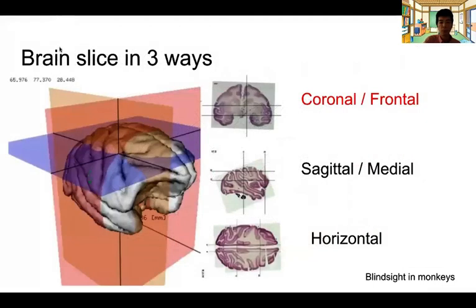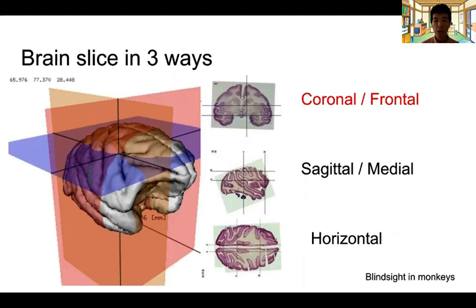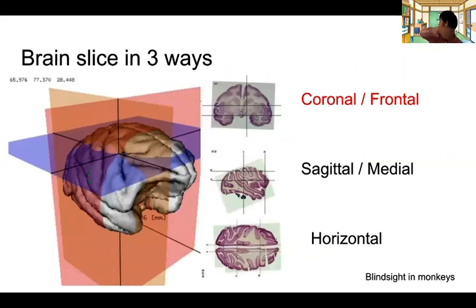Just to remind you of the terminology — three important anatomical planes: coronal or frontal slices cut the brain frontally; sagittal and medial slices cut the brain laterally; and horizontal slices cut the brain parallel to the ground.